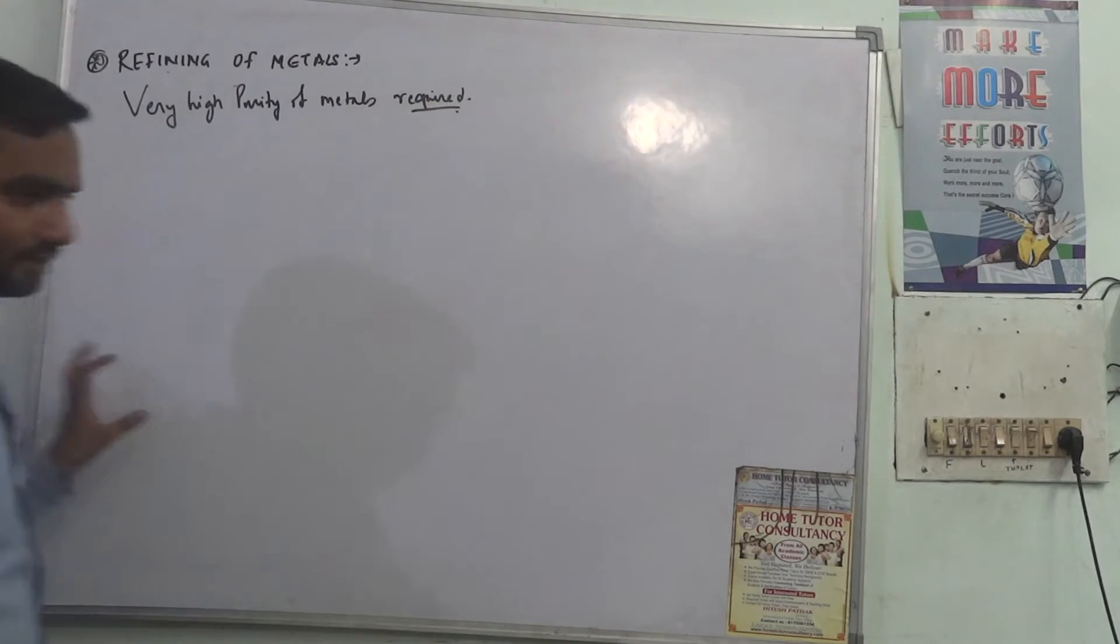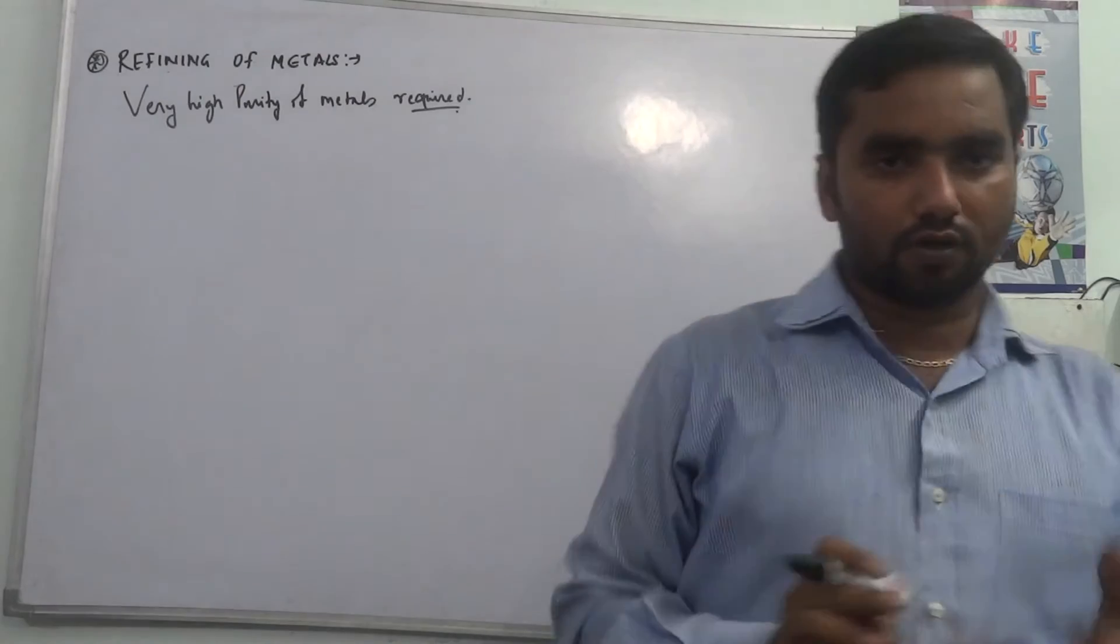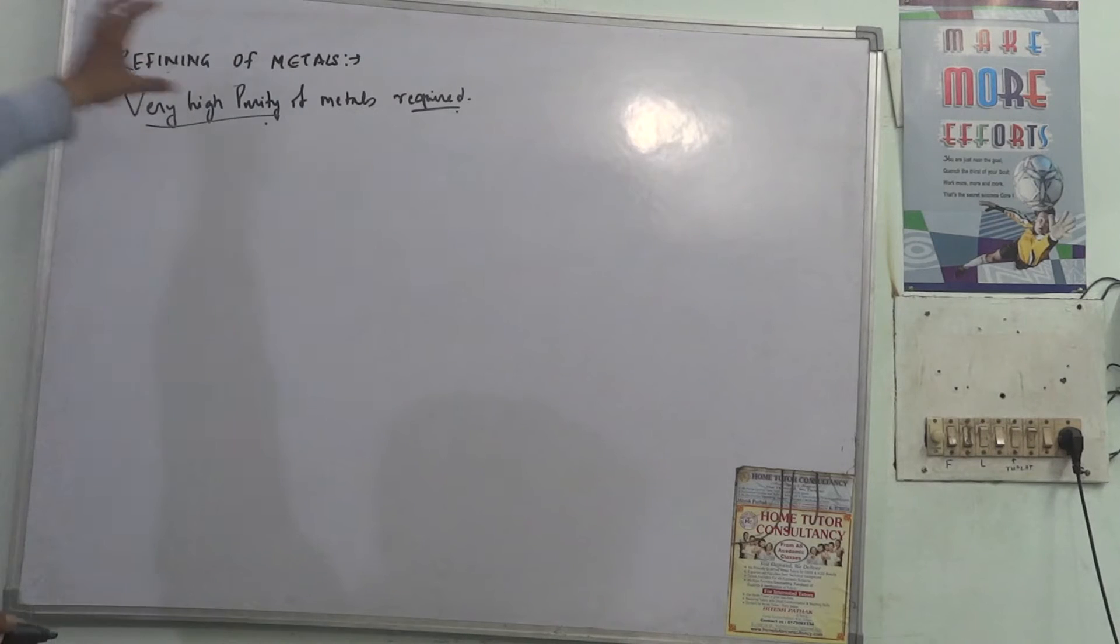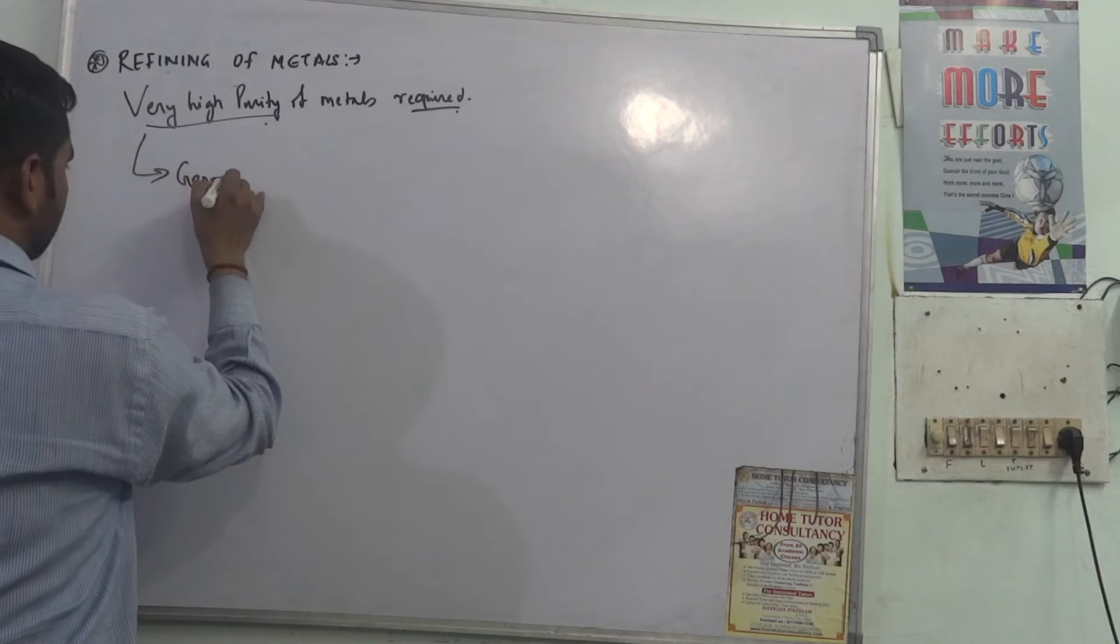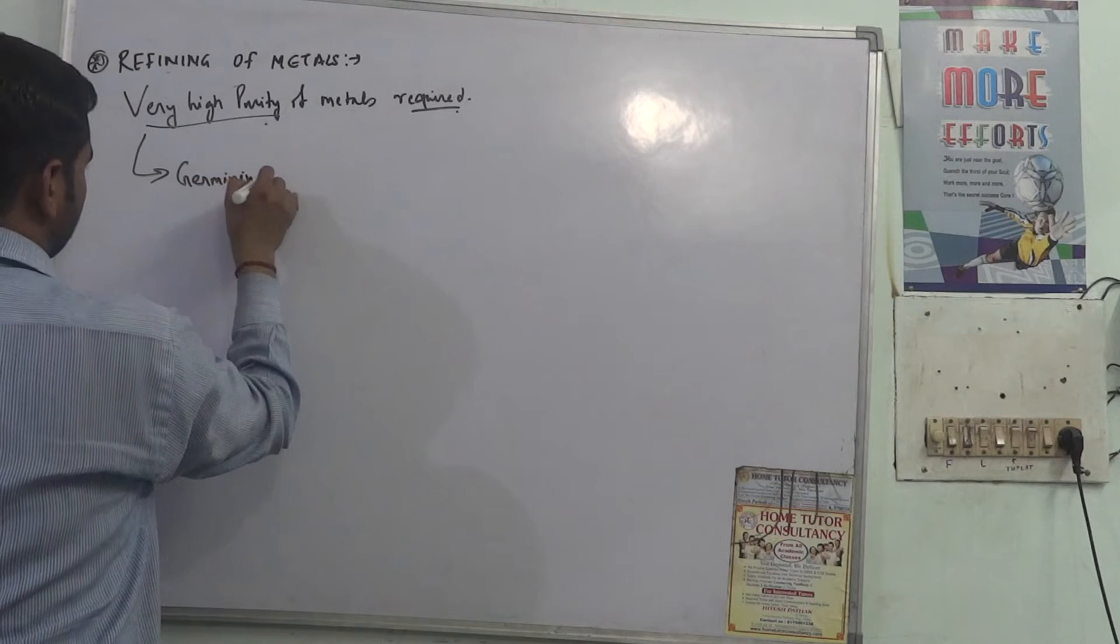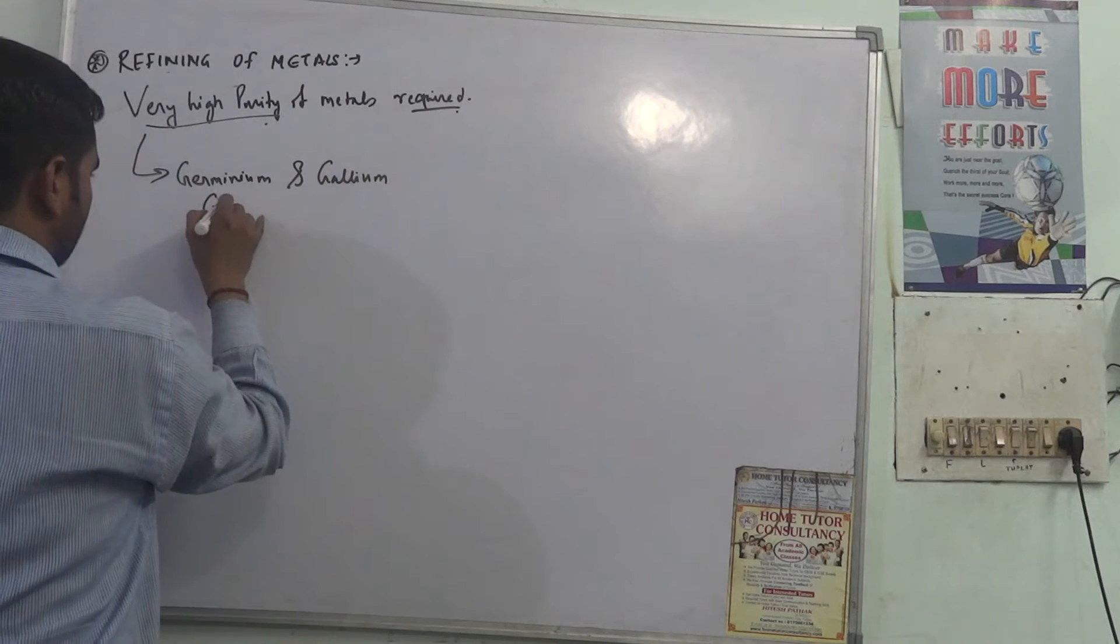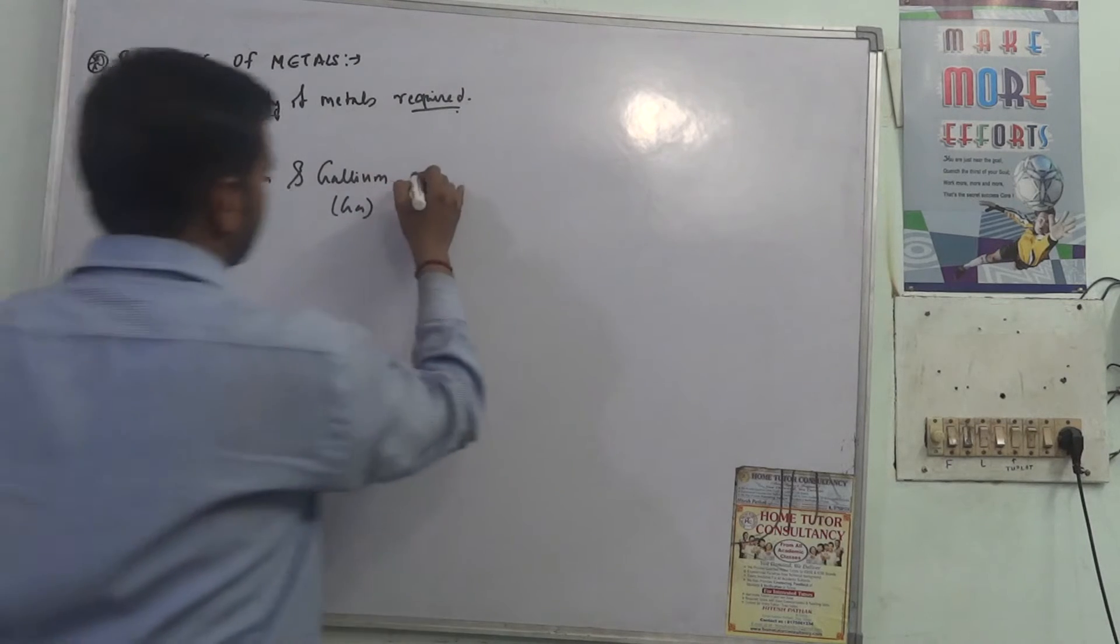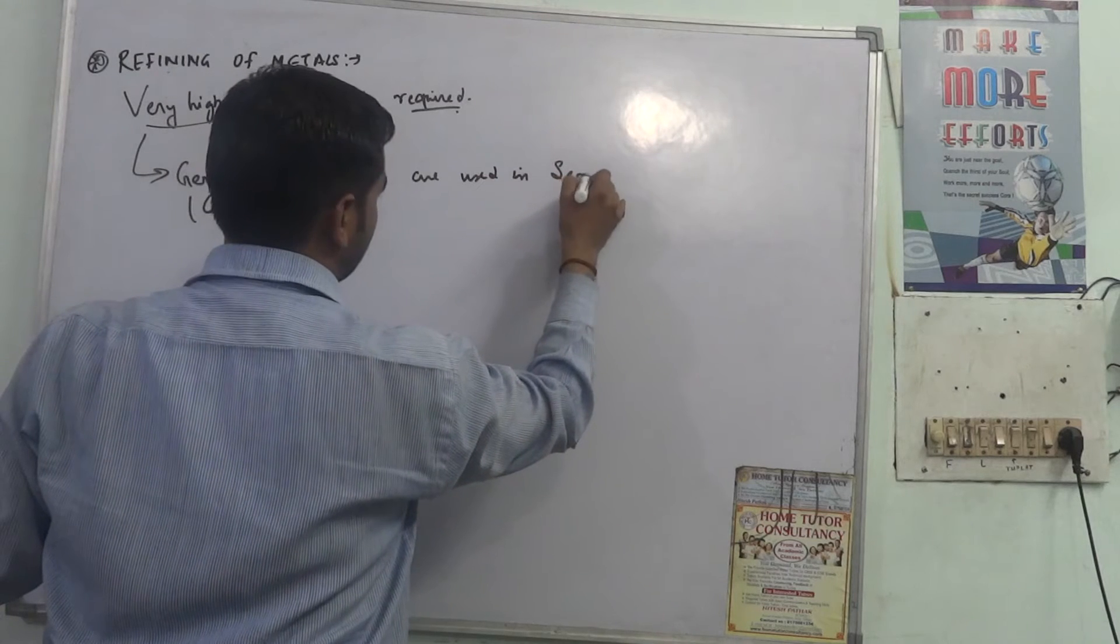In these cases we can't do it by electro refining. For example, if you take very high purity in which case this high purity is required, like germanium and gallium. These two metals are used in semiconductors.